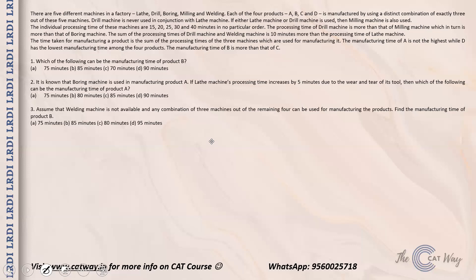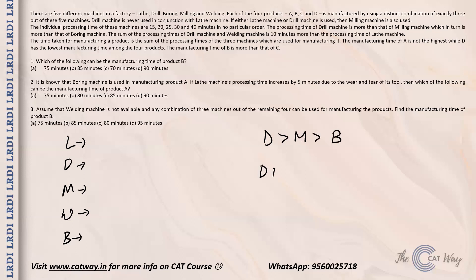Now let's work through the constraints. We have machines L, D, M, W, and B. The processing time of D is greater than M, which is greater than B. Also, D plus W equals L plus 10.